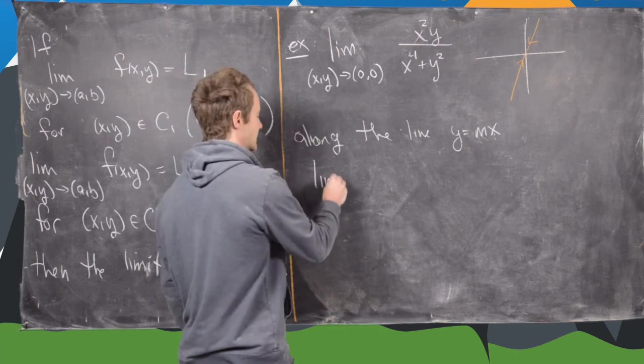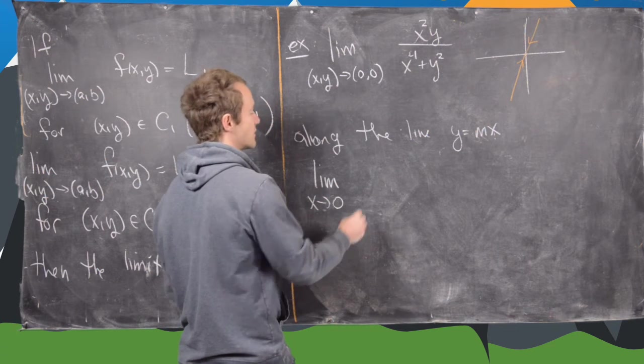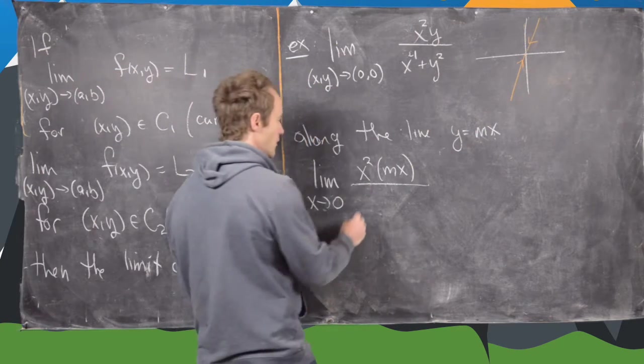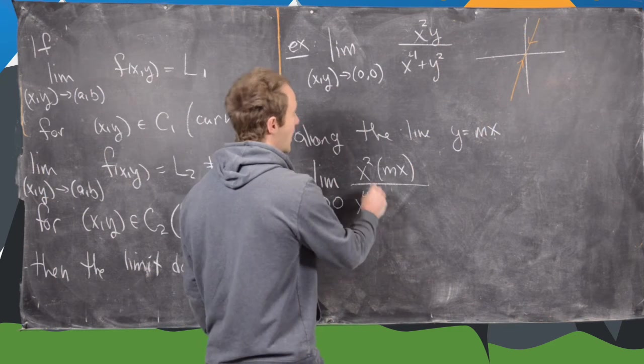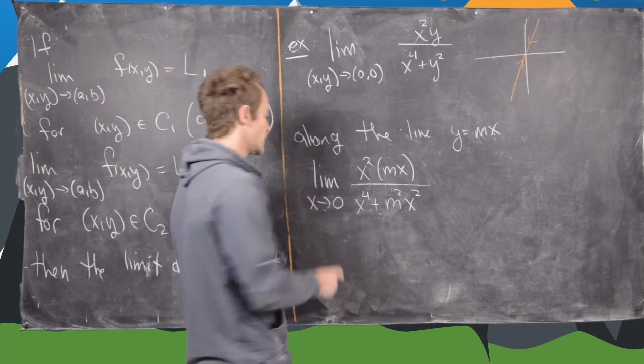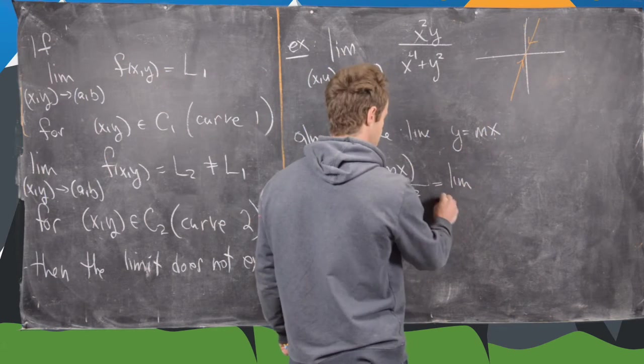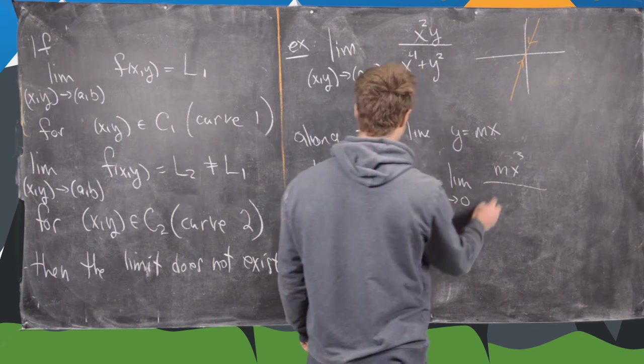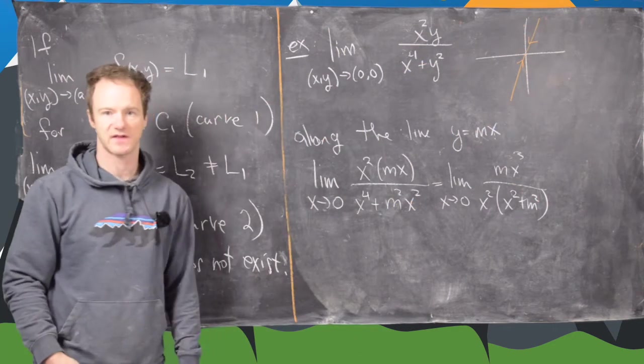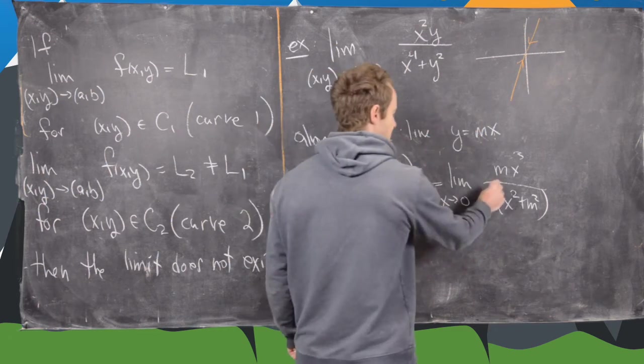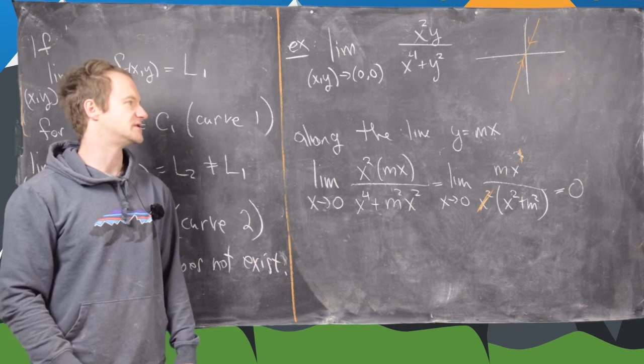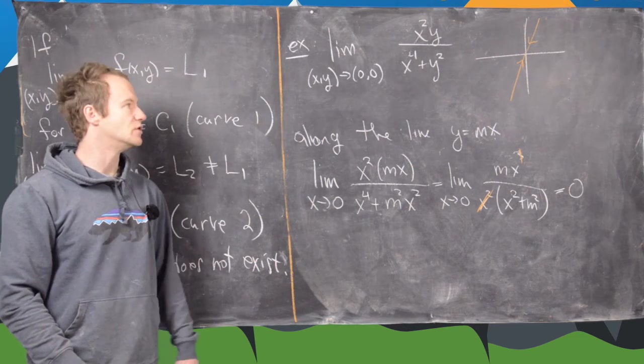Let's see what happens to the limit in that case. Here we have the limit as x approaches zero of x squared times mx over x to the fourth plus m squared x squared. But now notice we can factor x squared out of the denominator. That's going to give us mx cubed in the numerator, and then x squared times x squared plus m squared in the denominator. This x squared cancels down to an x to the first power, but that gives us a limit of zero. So it looks like we get a limit of zero along every line. So now we need to move on to maybe another curve.